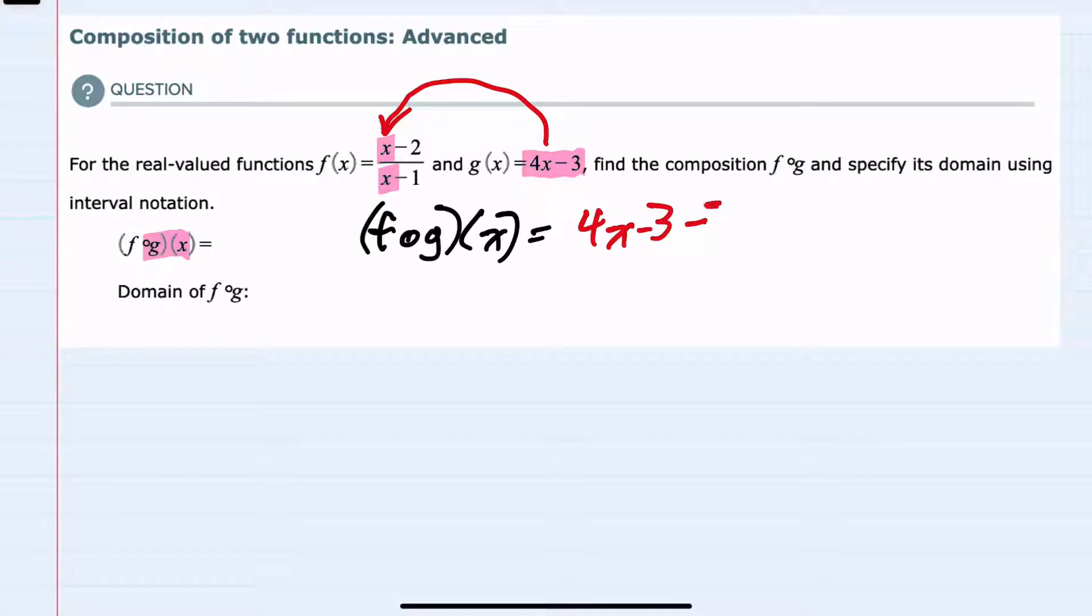We would have minus 2 in the numerator. Replacing the other x in f with 4x minus 3, I would have to subtract 1 in the denominator.